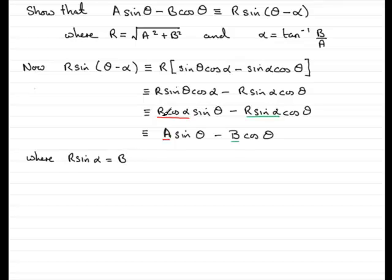And if I number these two equations, say, 1 and 2, then I've got simultaneous equations, which I can work out to find R and alpha.